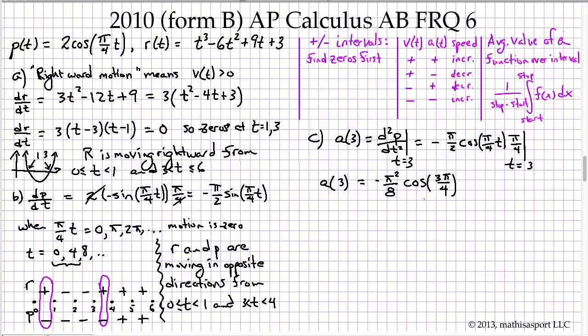We have a(3) equals, let's see, negative π²/8 times the cosine of 3π/4. Hopefully you're not stressing about evaluating the cosine of 3π/4 because this is not a calculator section.